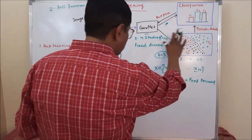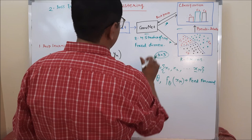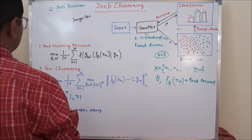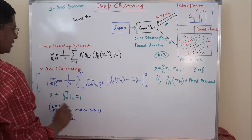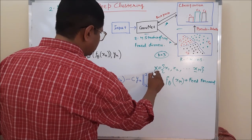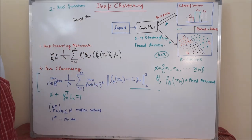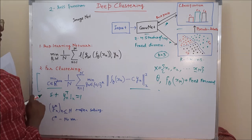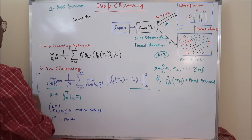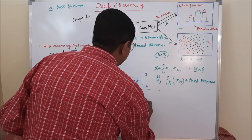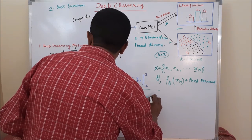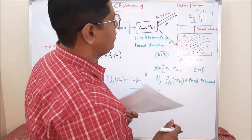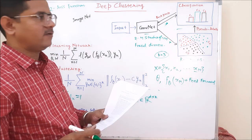So now go through the first part, loss function for clustering. So authors have used this as a loss function for clustering. Here we will go through one by one to understand this. This is actually centroid k-means clustering. So I assume that you already aware of k-means clustering.